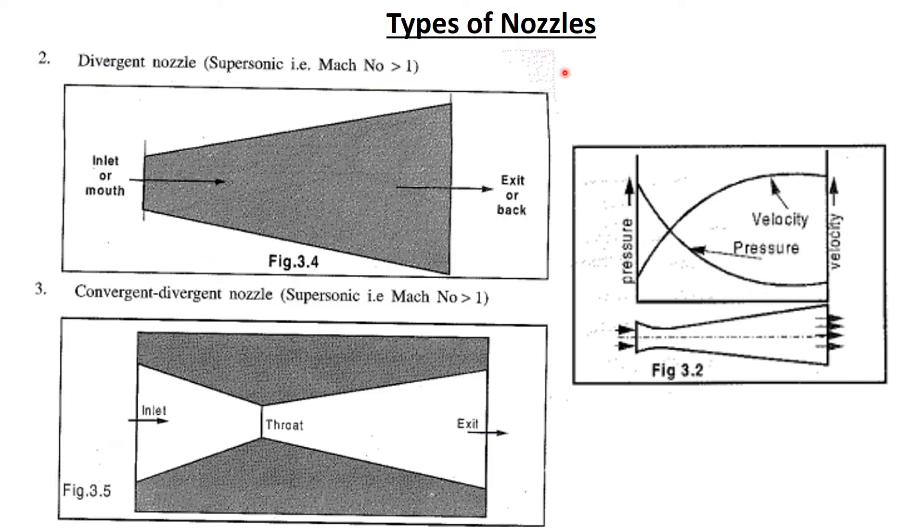Now, types of nozzles. Types of nozzles we are going to discuss here. Usually, if you are using the nozzles, one is divergent nozzle. Usually in the inlet condition, the velocity of fluid is supersonic, the sonic velocity of the fluid. This is the divergent type nozzle.